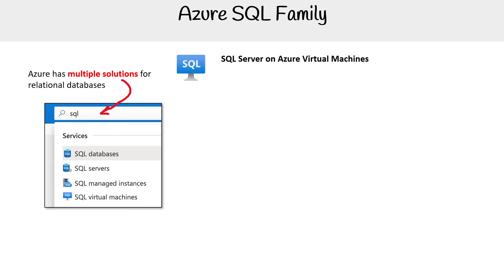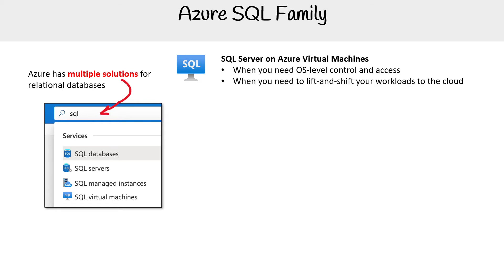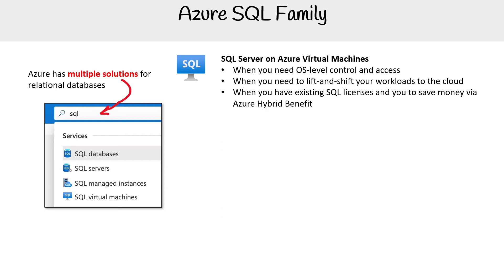At the top, you have SQL Server on Azure Virtual Machines, or SQL VM. When you need OS-level control and access, when you need to lift and shift your workloads to the cloud, when you have an existing SQL license and want to save money via the Azure Hybrid Benefit, this is when you're going to use that. The idea of lift and shift is that on your on-premise environment, you're running a virtual machine that is your database, and you can literally save a virtual image, import that into Azure, and it runs exactly how it did on-premise. You don't get a lot of the advantages of the cloud, but it's the easiest way to get onto the cloud.